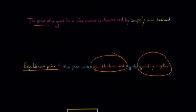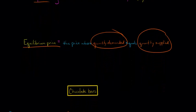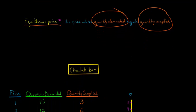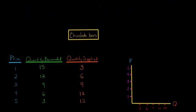So I want to give you an example and I'll show you how this works. Let's take the market for chocolate bars. We can think about supply and demand for chocolate bars at different prices. Let's say at a price of $1 that consumers would demand 15 chocolate bars, but producers would only be willing to supply 3 chocolate bars.